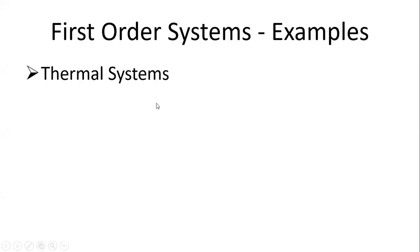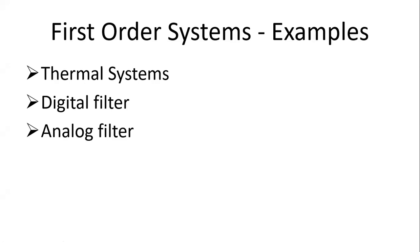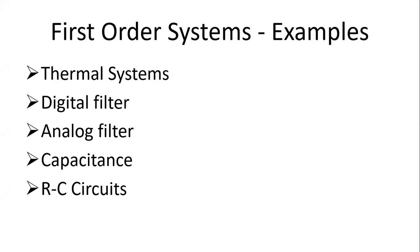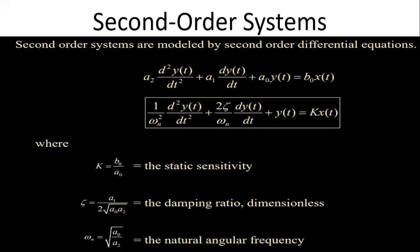Examples of first order systems include thermal systems, thermocouple temperature measurement systems, digital filters, analog filters, and capacitance — all RC circuits involving resistance and capacitance, because RC stands for time constant. All these instruments are categorized as first order systems.